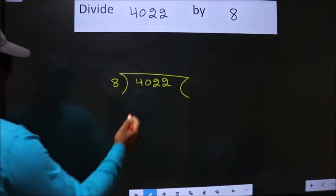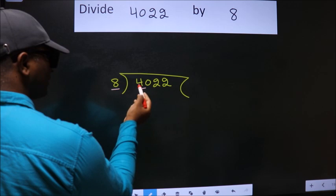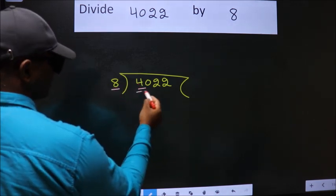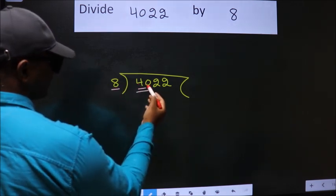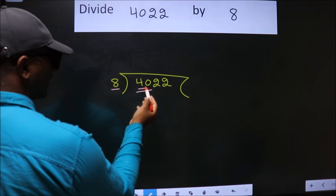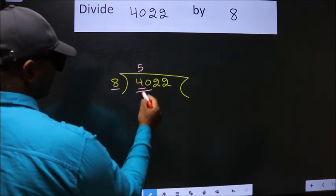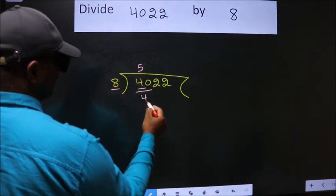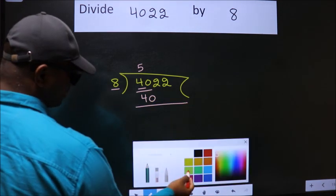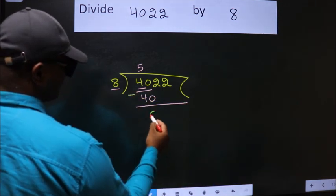Here we have 4, and here 8. 4 is smaller than 8, so we should take 2 numbers: 40. When do we get 40 in the 8 table? 8 fives are 40. Now we should subtract. We get 0.